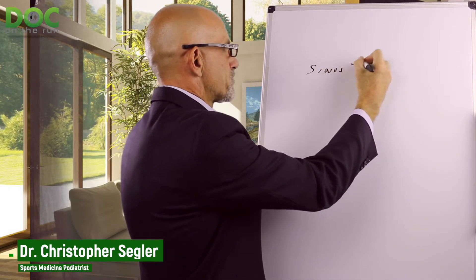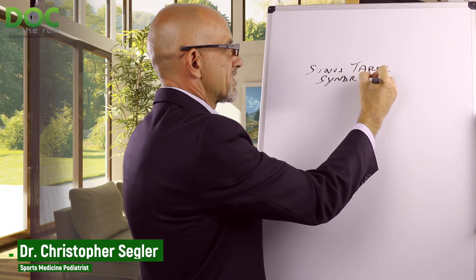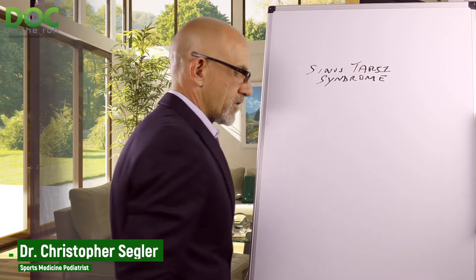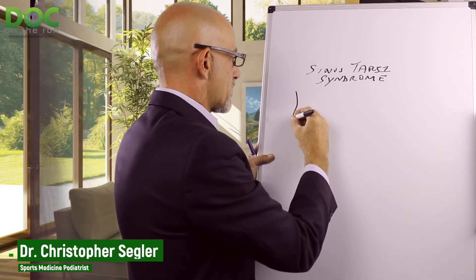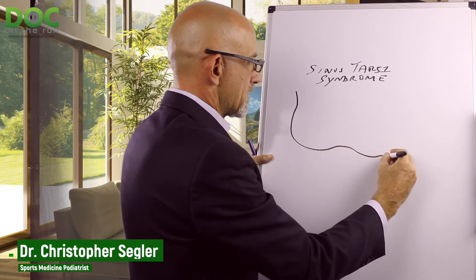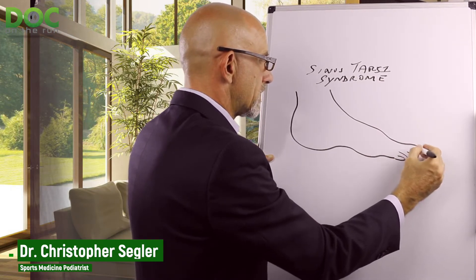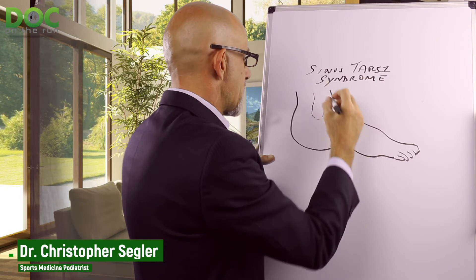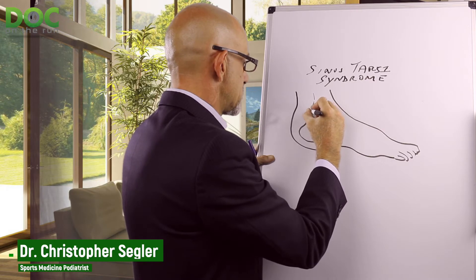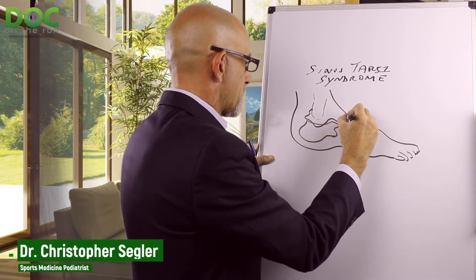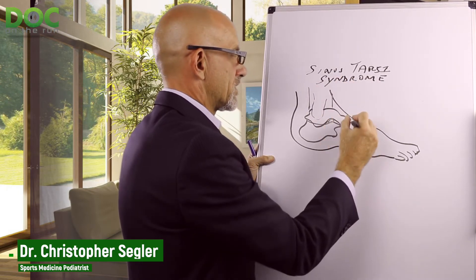The first thing is sinus tarsi syndrome. This is something that can happen if you sprain your ankle or roll your ankle — that's one of the most common causes. The sinus tarsi is a part of your foot: if you look at the outside of your foot, you've got the little toes on one side, the big toe on the other, the fibula or ankle bone, the heel bone behind it, and the talus sitting on top. Your shin bone is up over that, and the little hole in there is what we call the sinus tarsi.